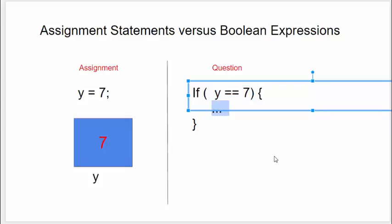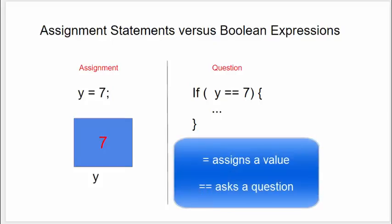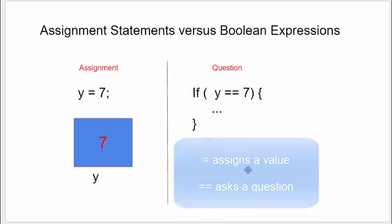If y has got some other value besides 7, this block of code here will not be executed. Notice that when we use the single operator equals, it's an assignment, and when we use the double equals operator, it's a Boolean expression or a question.